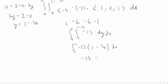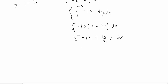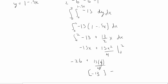Evaluating the inner integral gives −13(1 − 0.5x). Distributing: −13 + (13/2)x, integrated from 0 to 2. Taking the integral: −13x + 13x²/4, evaluated from 0 to 2 gives −26 + 13(4)/4 = −26 + 13 = −13. So our final answer is −13.